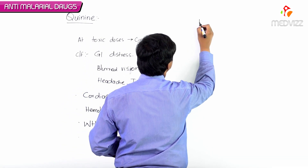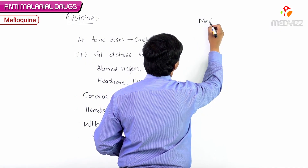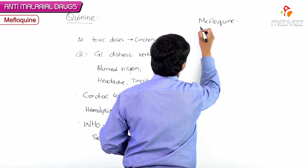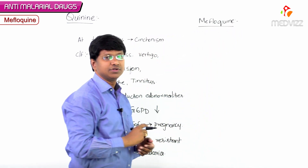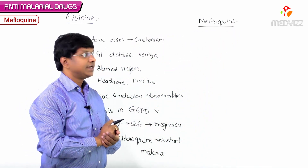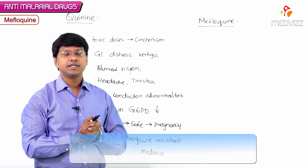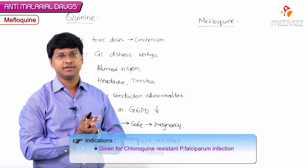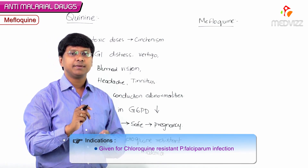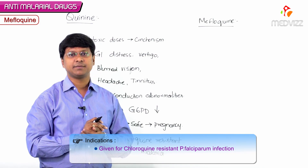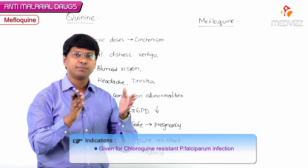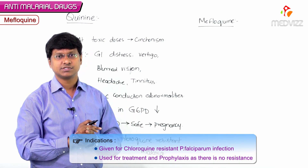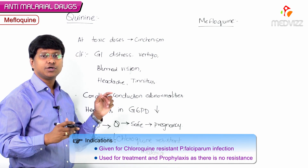Let me discuss about the other drug that is mefloquine. Mefloquine can be used for chloroquine resistant plasmodium falciparum infections. It can be used for both treatment purpose as well as for the prophylaxis.